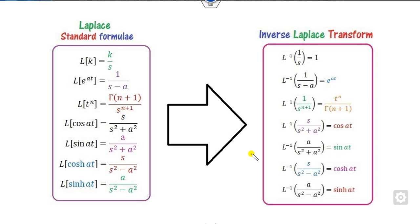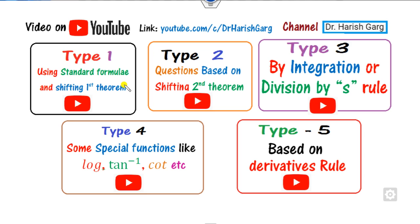Before we move on, we will always remember that there are some standard Laplace transformations and the corresponding inverse Laplace transformations. What we have discussed so far: we solved Type 1 based on the standard and the first shifting theorems, Type 2 on the second shifting theorem problems, division by S rule, and now in this last part we will see how you can solve problems with the help of derivative rules.